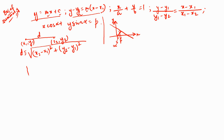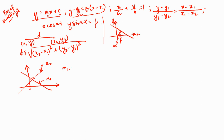We also saw that if there are two perpendicular straight lines with slopes m1 and m2, then m1 × m2 = -1. That's a quick summary of what we discussed in the previous class so everyone is on the same page before we move on.